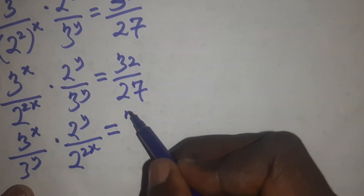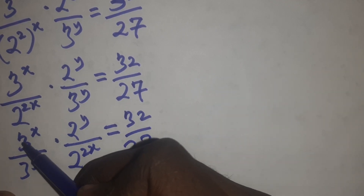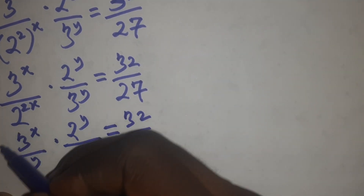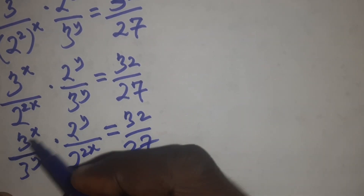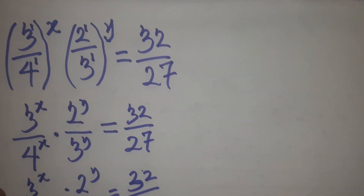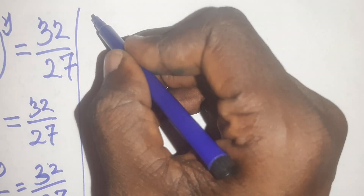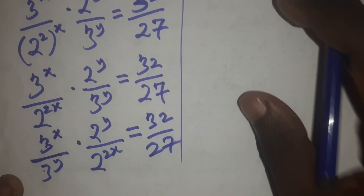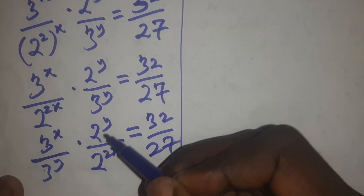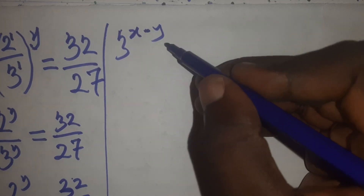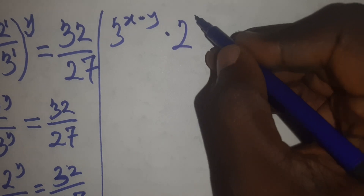This equals 32 over 27, and this is exactly what I want — the bases are now the same and corresponding. I can now apply the law of indices for division: when dividing values with the same base, pick one base and subtract the powers. So I get 3 raised to power (x minus y) times 2 raised to power (y minus 2x), equals 32 over 27.